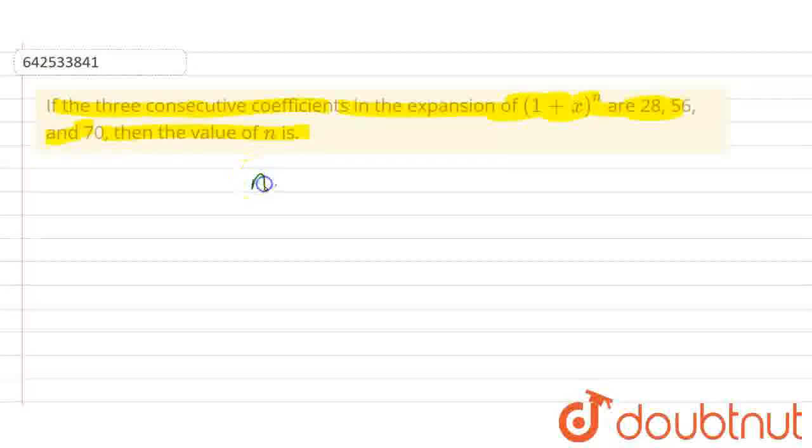So let the three consecutive coefficients be nC(r-1) = 28, nCr = 56, and nC(r+1) = 70. These are three consecutive coefficients.